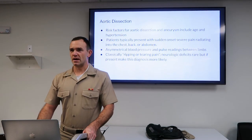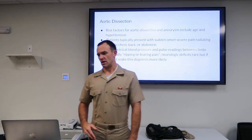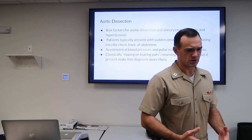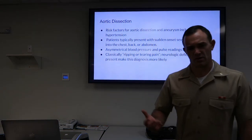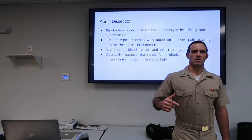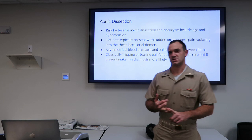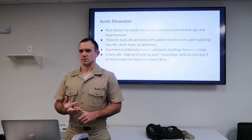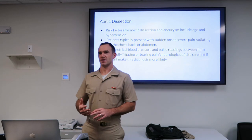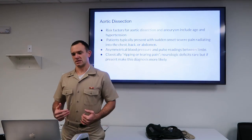Classically, aortic dissection is described as ripping, tearing pain to the back. It can mimic pancreatitis, and anything bad in the abdomen can present similarly. It radiates to the back of the chest. One thing that may be helpful diagnostically: anything that radiates from the abdomen to the back — you should think about bad things in the retroperitoneal space: the aorta, the kidneys, and the pancreas. Those are three things that can cause really bad pain to the back.